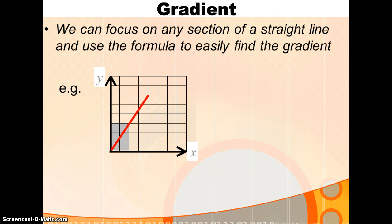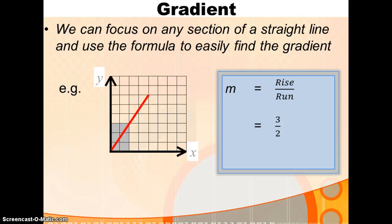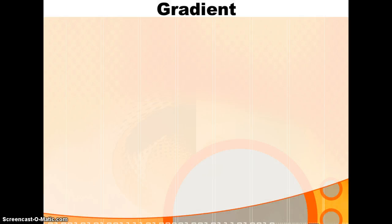Here, you've got the same line. Again, if we focus on a smaller section, your rise is 3, your run is 2. So, the gradient rise over run, 3 over 2, which is what we had in the previous slide.